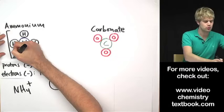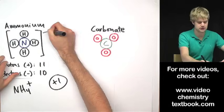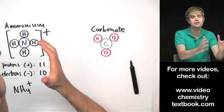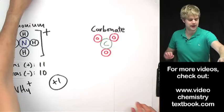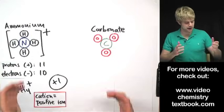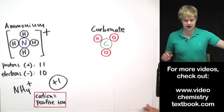I usually will also take the structure of this ammonium and put the whole thing in brackets and put a plus outside to indicate that this whole group of atoms together has a positive charge. I can also call this thing a cation, a polyatomic cation because a cation is what we call ions that have a positive charge.